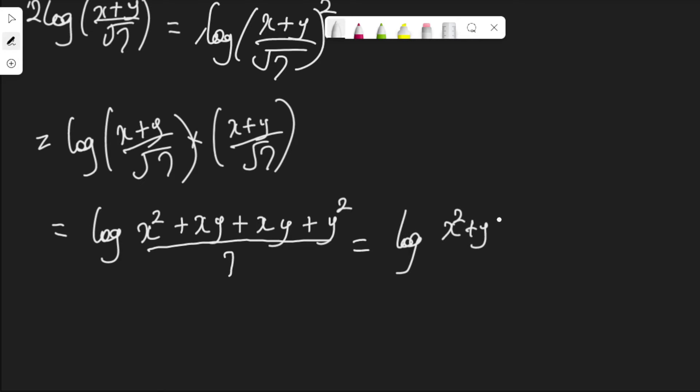x squared plus y squared, then xy plus xy is 2xy over 7.